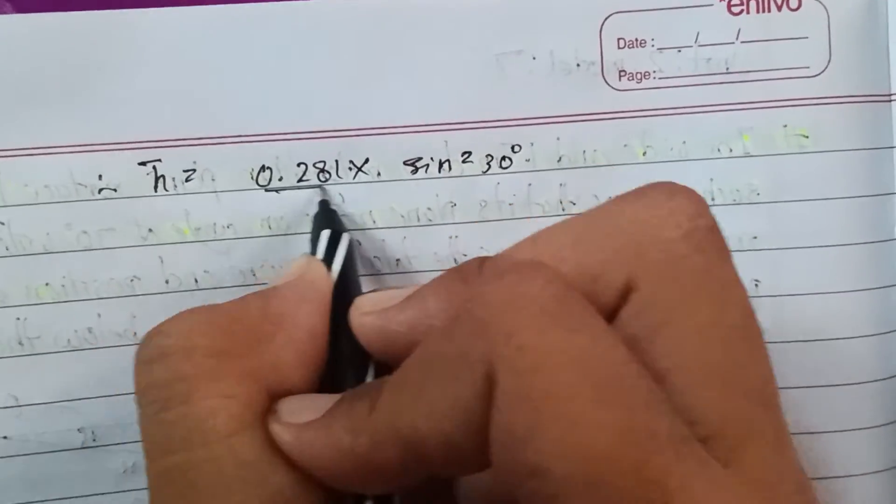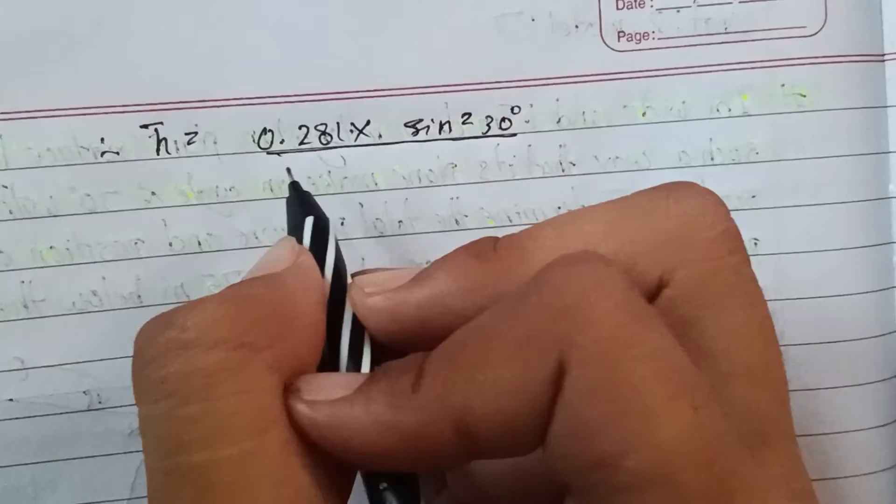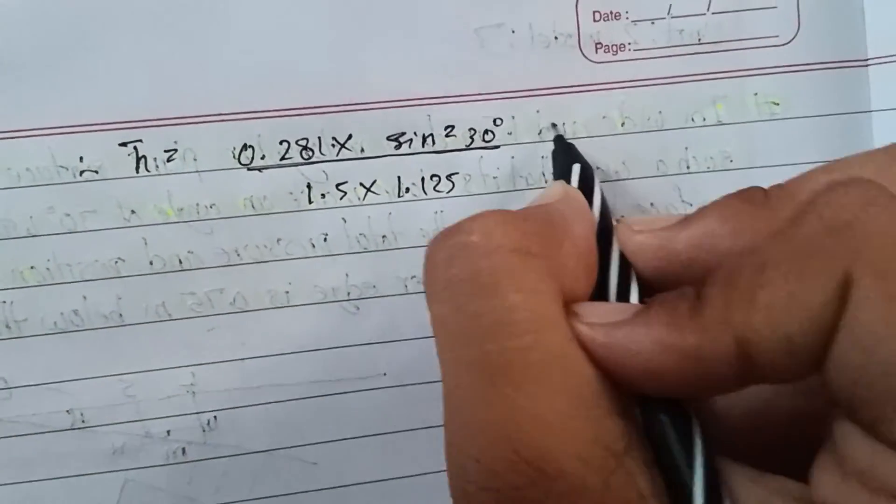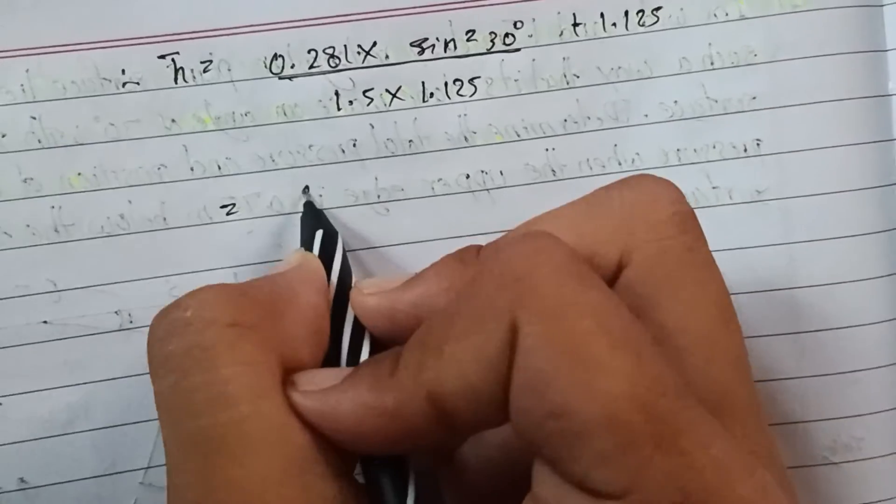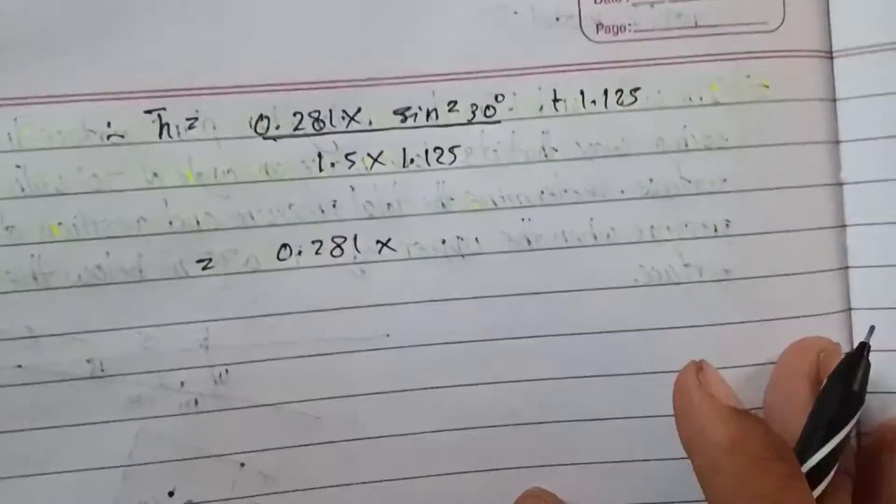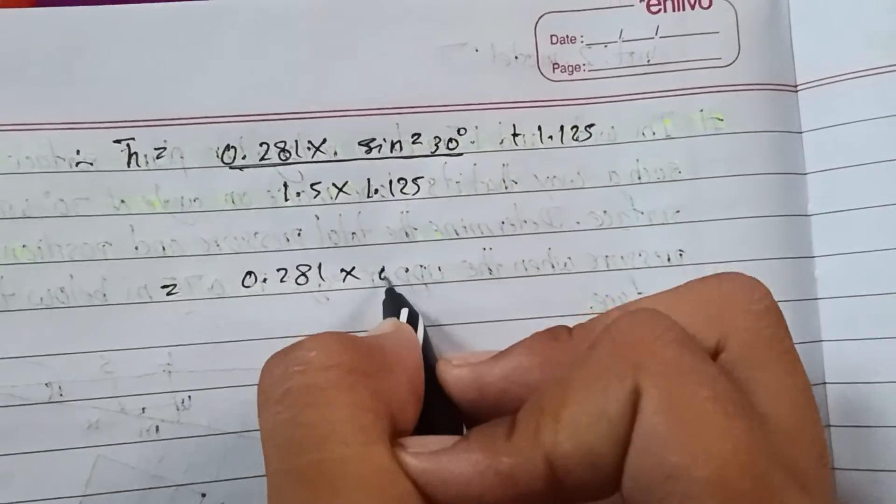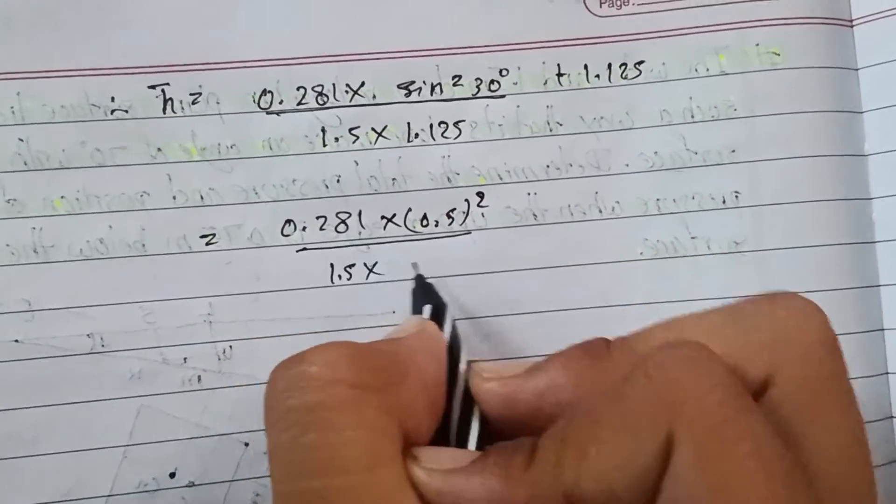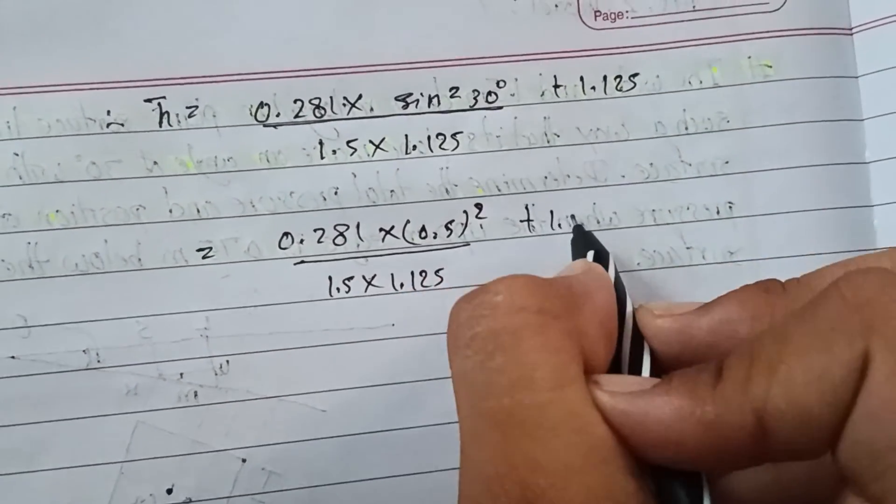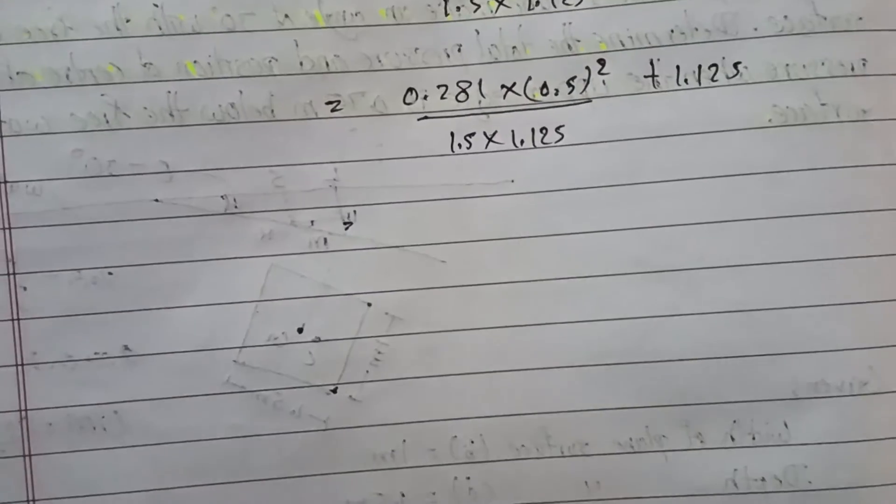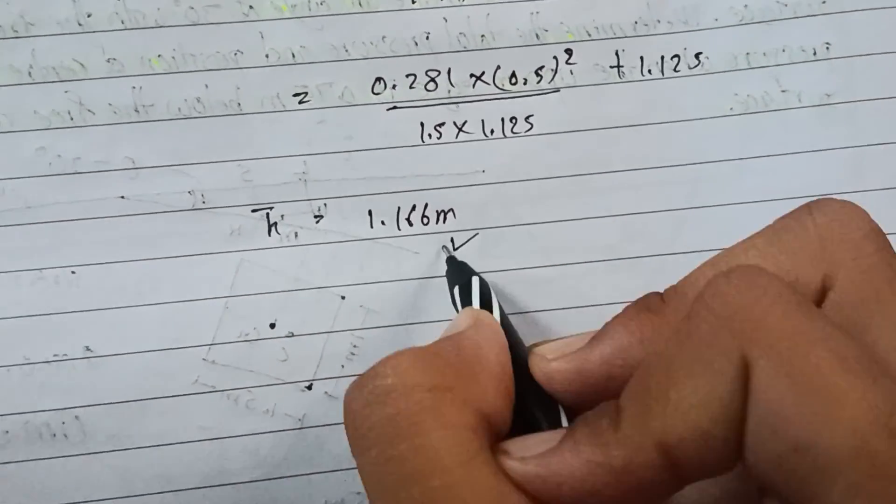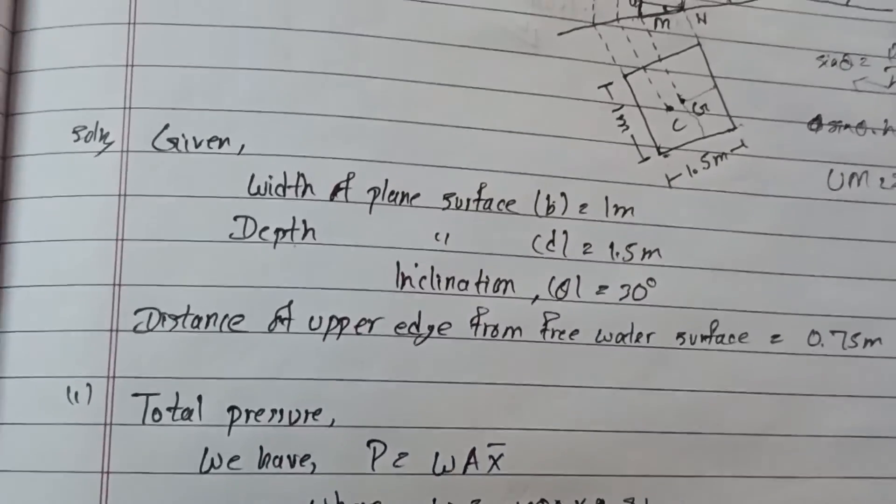This gives 0.281 times 0.25 divided by 1.5 times 1.125, plus 1.125. Calculating this: 0.281 times 0.25 is 0.070, divided by 1.6875, plus 1.125 equals 1.166 meters. So the center of pressure is at 1.166 meters.